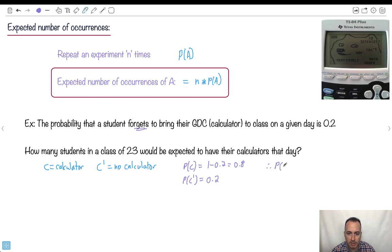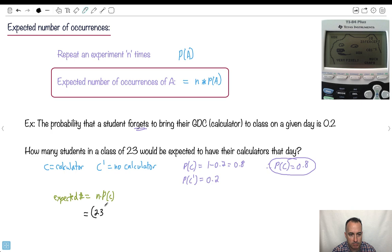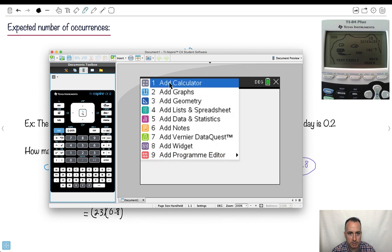How many students are expected to have their calculators? Now I have what I need. The expected number equals n times P of C. What's n? N is the number of times I repeat this experiment. I'm repeating it 23 times because it's 23 students. I'm going to do that times 0.8. You're allowed to use your calculator on your exam, so let's just do that.